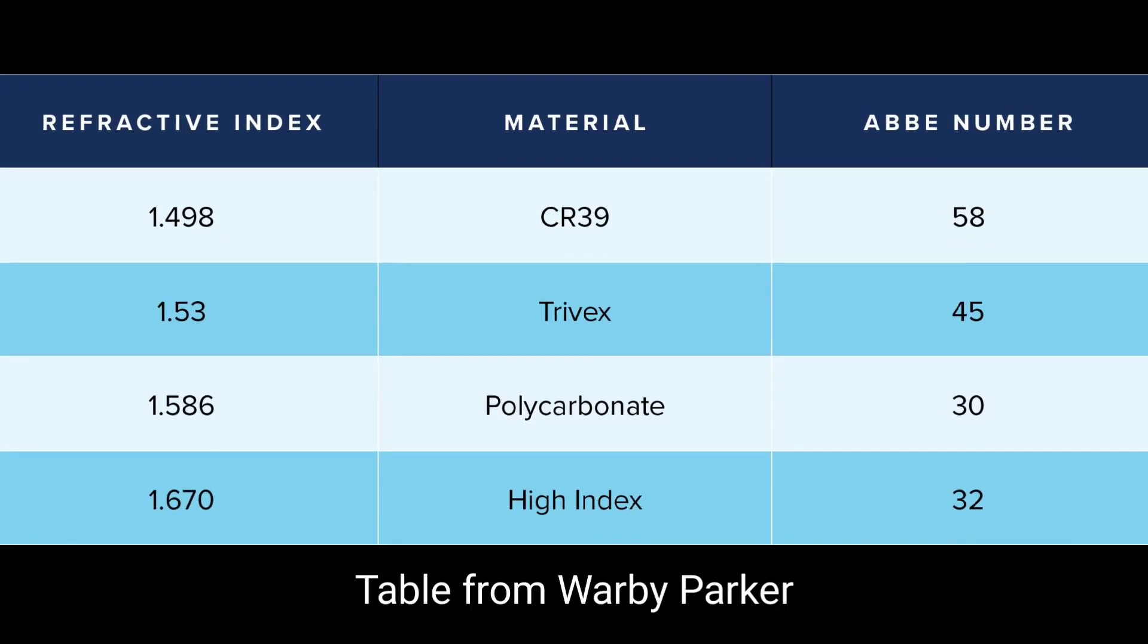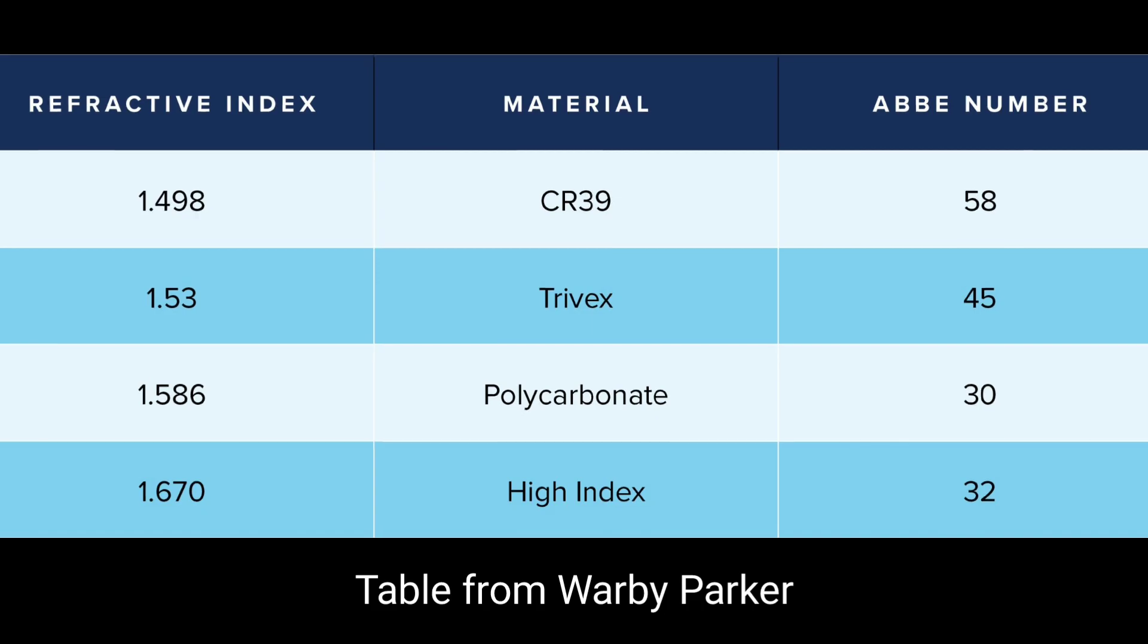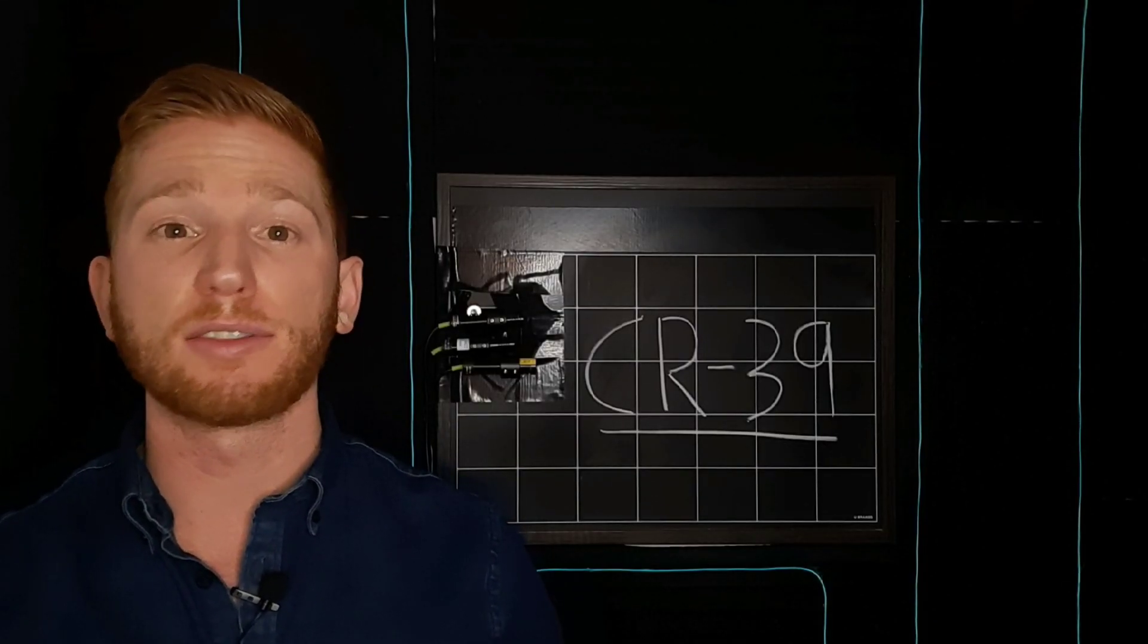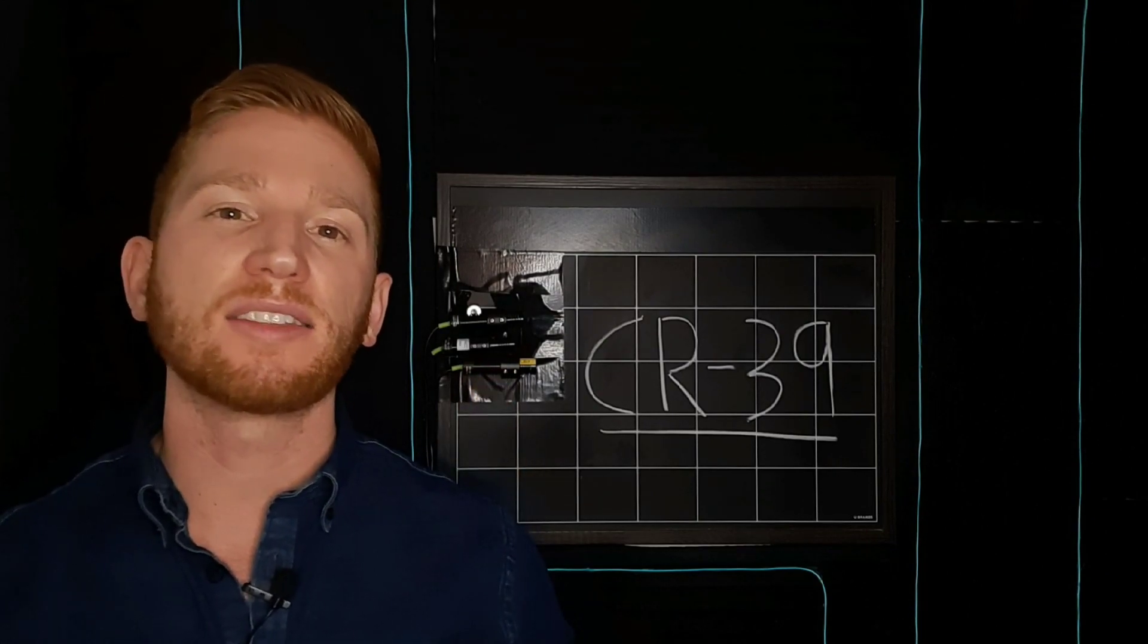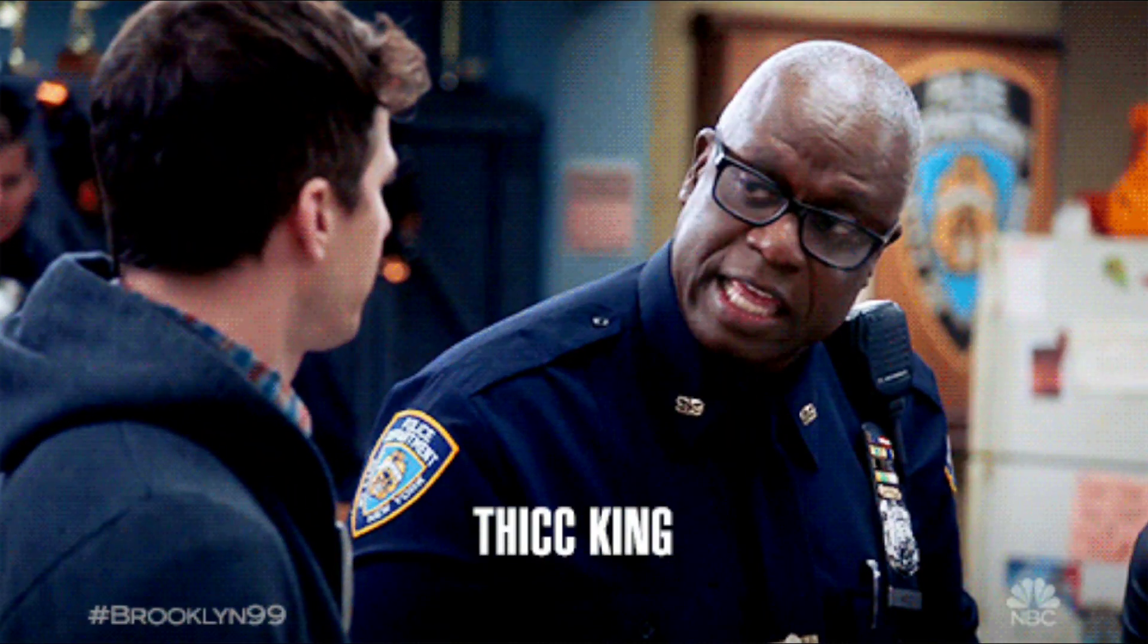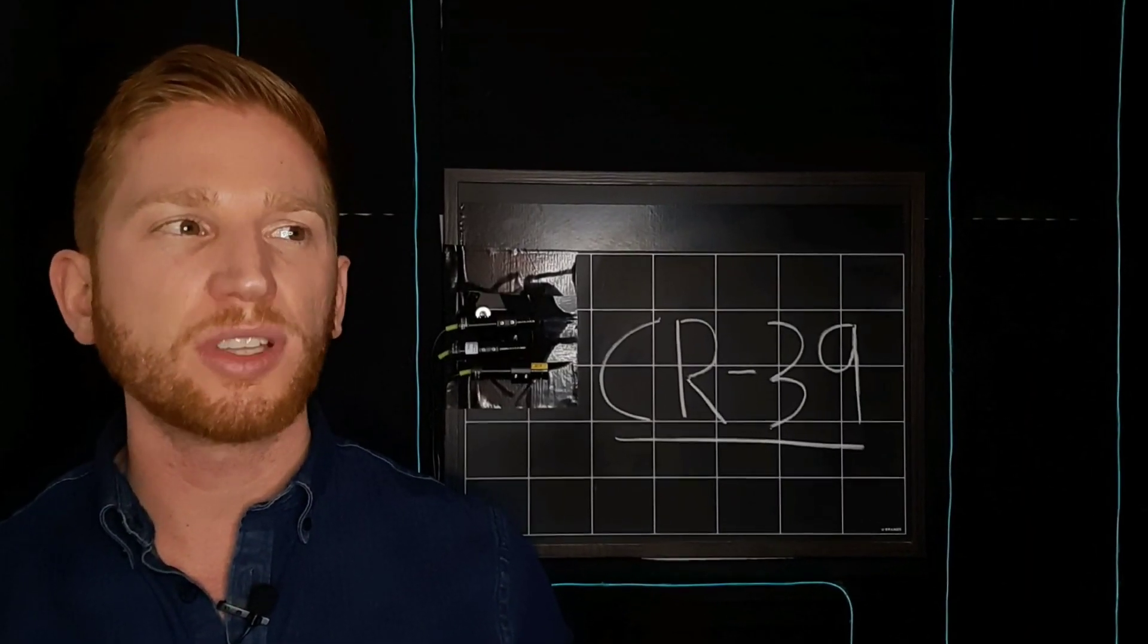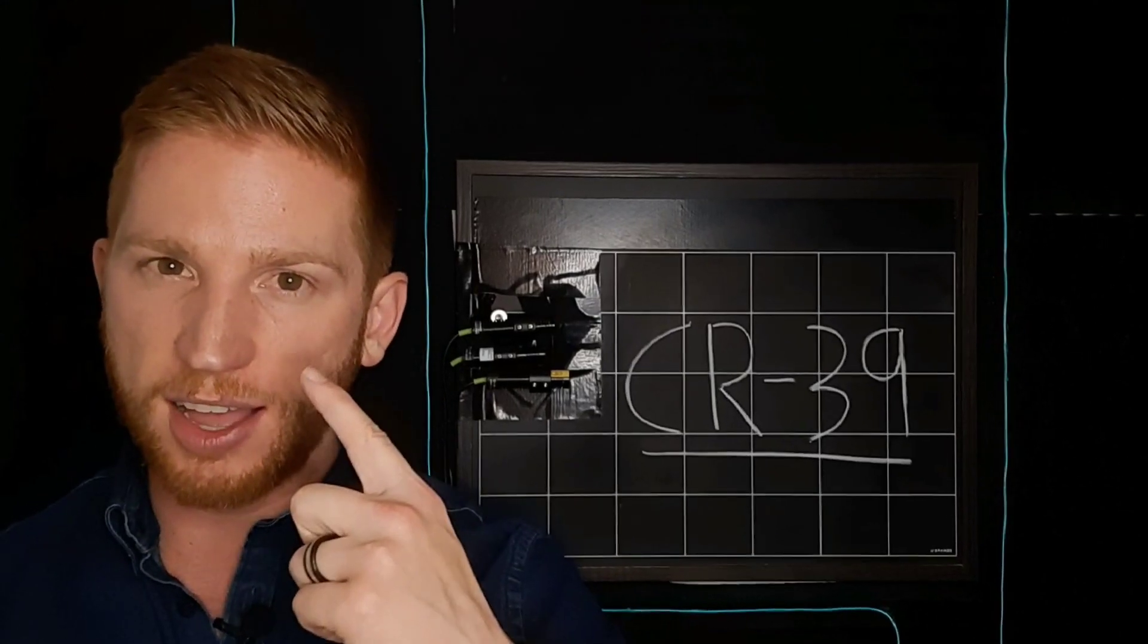Here are the most common plastics for prescription lenses. CR-39 has the highest abbey value out of those materials, which is good, but its low refractive index results in thicker, heavier lenses, making this not ideal for people with really strong prescriptions with a lot of errors in their eyes.